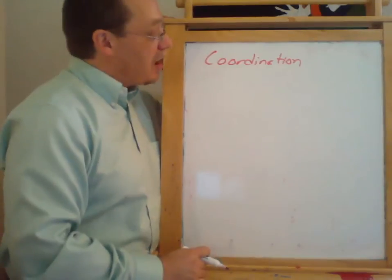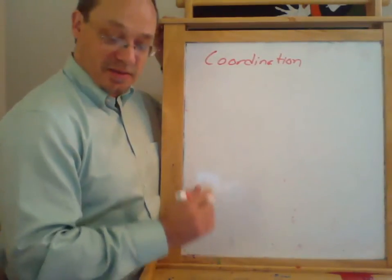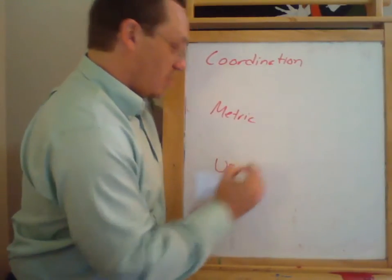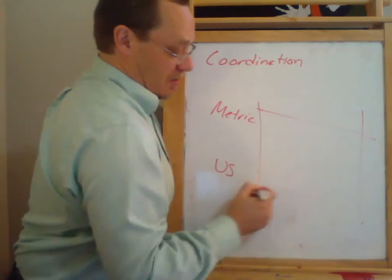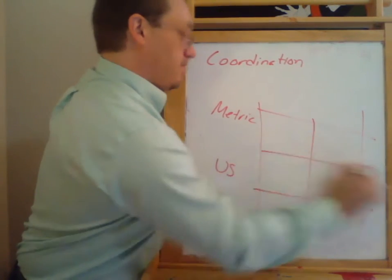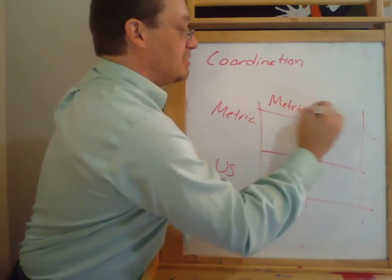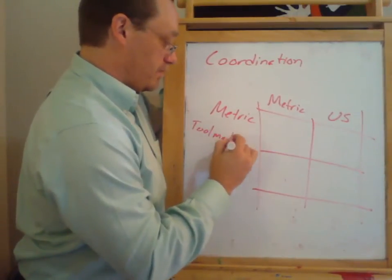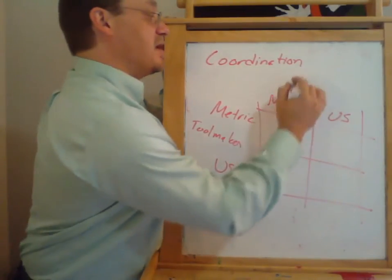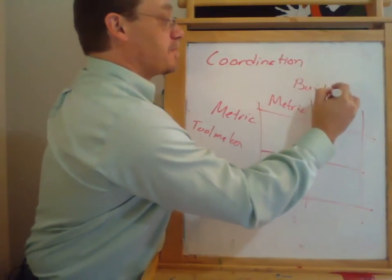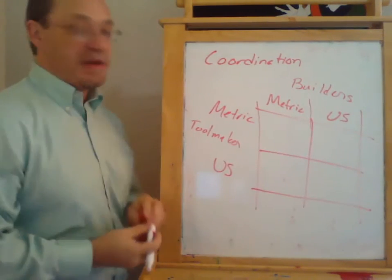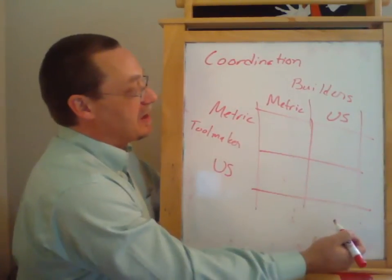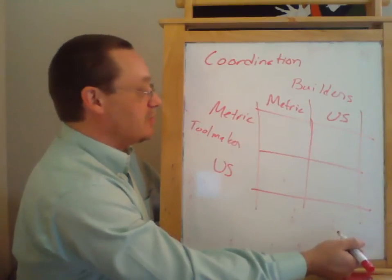That could be in something like computing. The example I'm going to look at is units of measurement. We could go ahead and use metric, or we could use the U.S. system of measurement. We're going to have a tool maker and we're going to have builders. The tool maker could manufacture everything in metric or in U.S. units, and builders could talk about building things in metric or U.S. units of measurement.